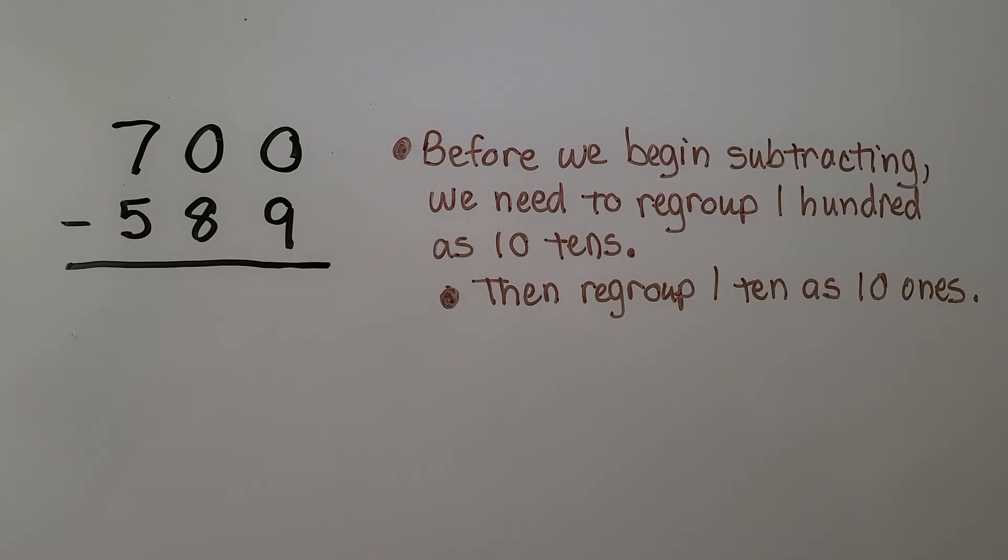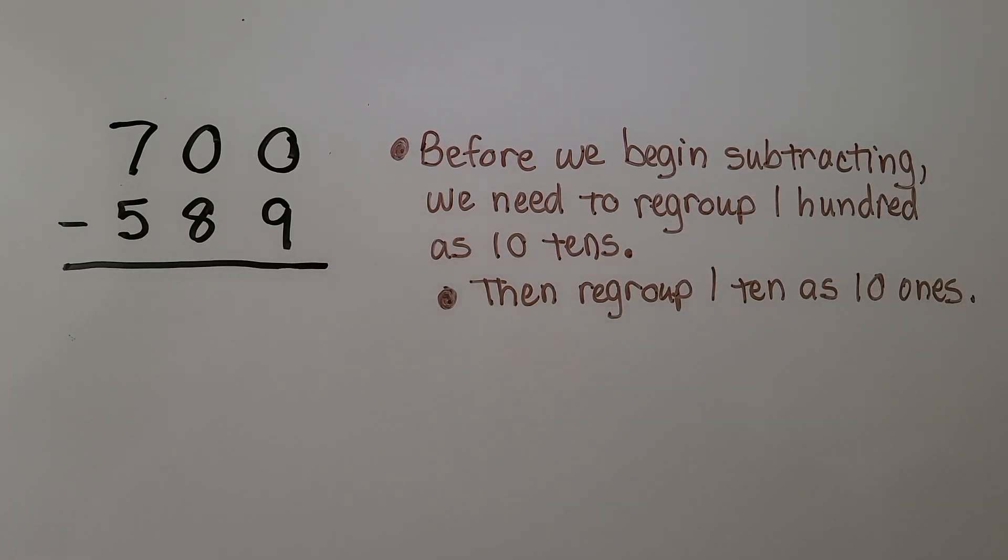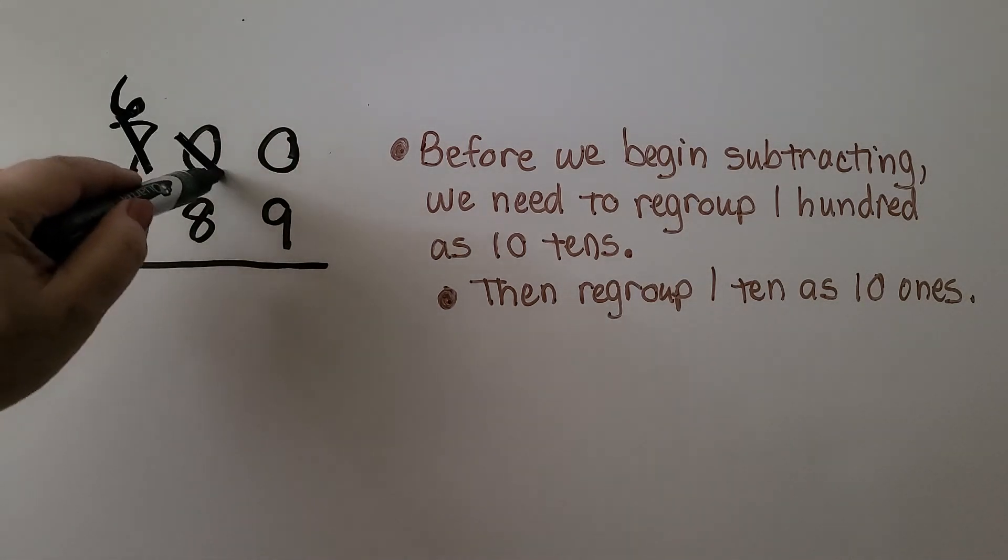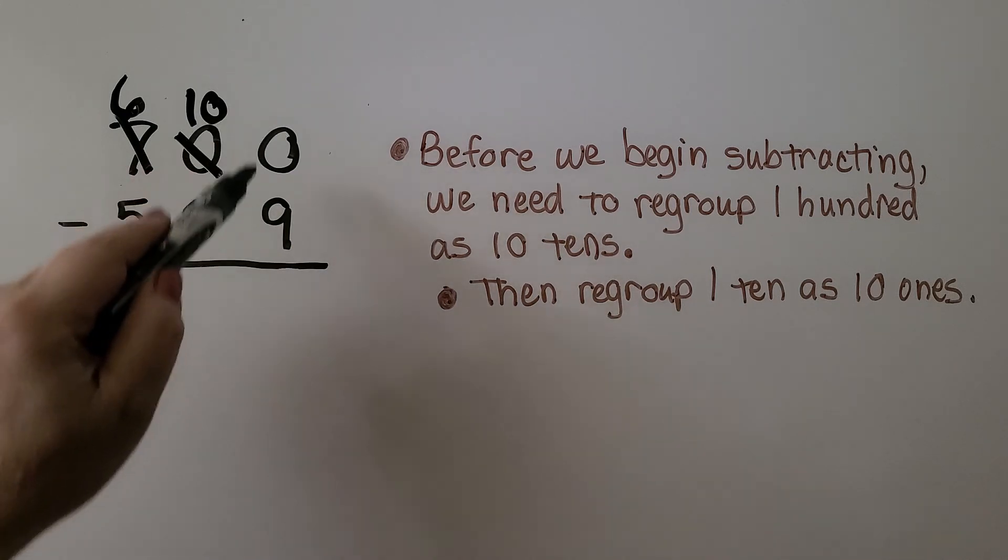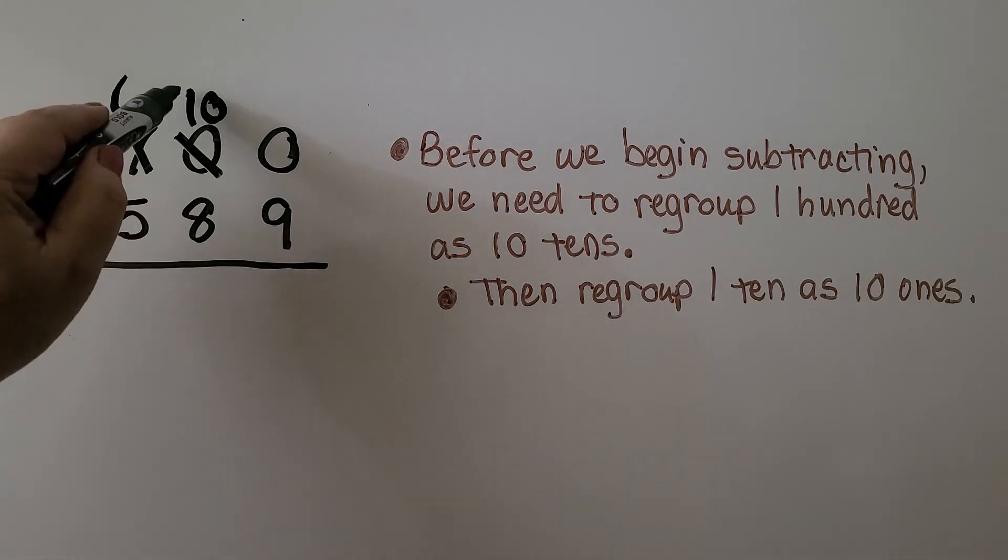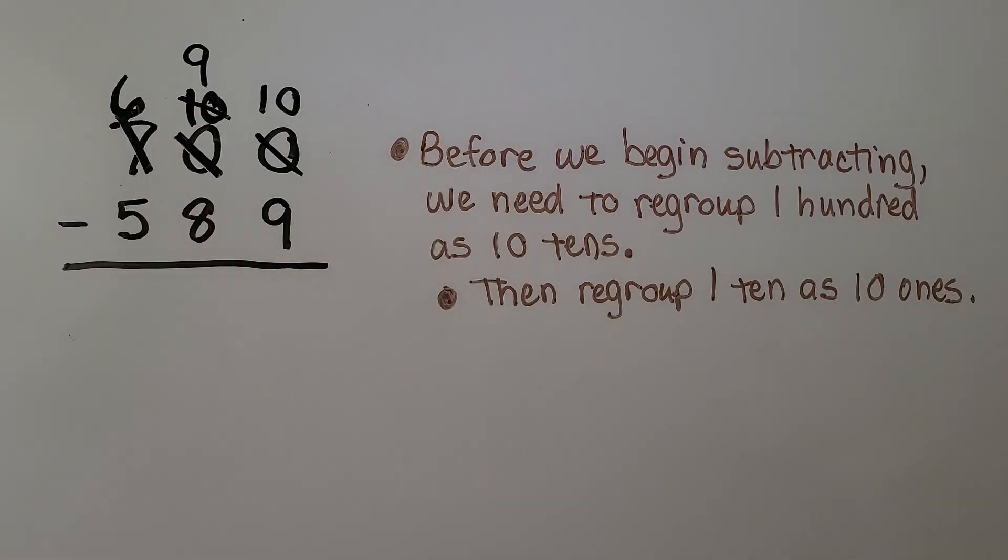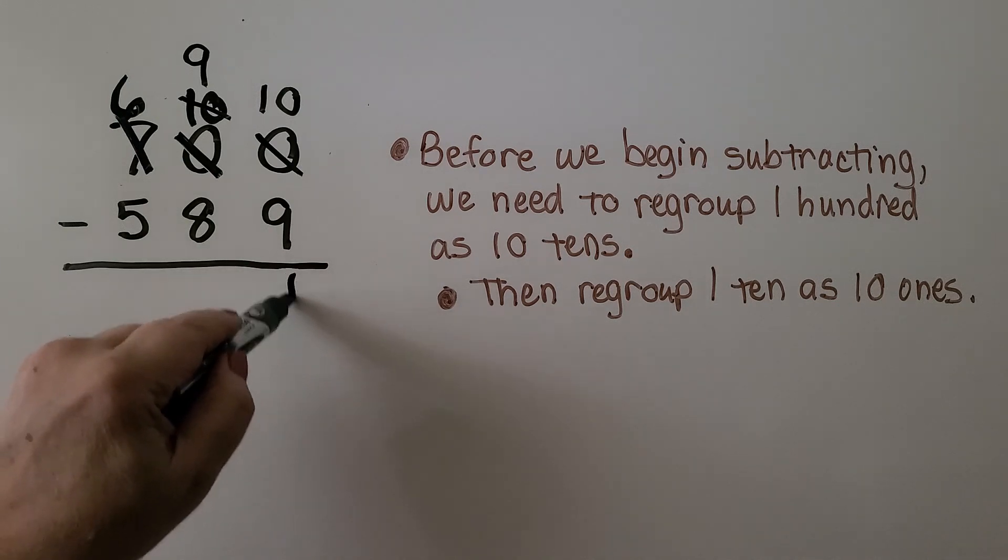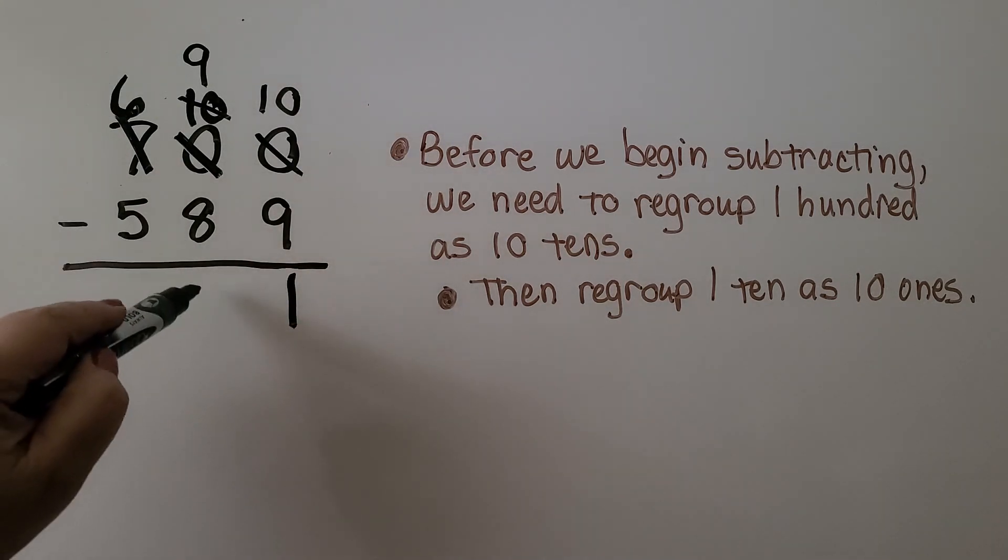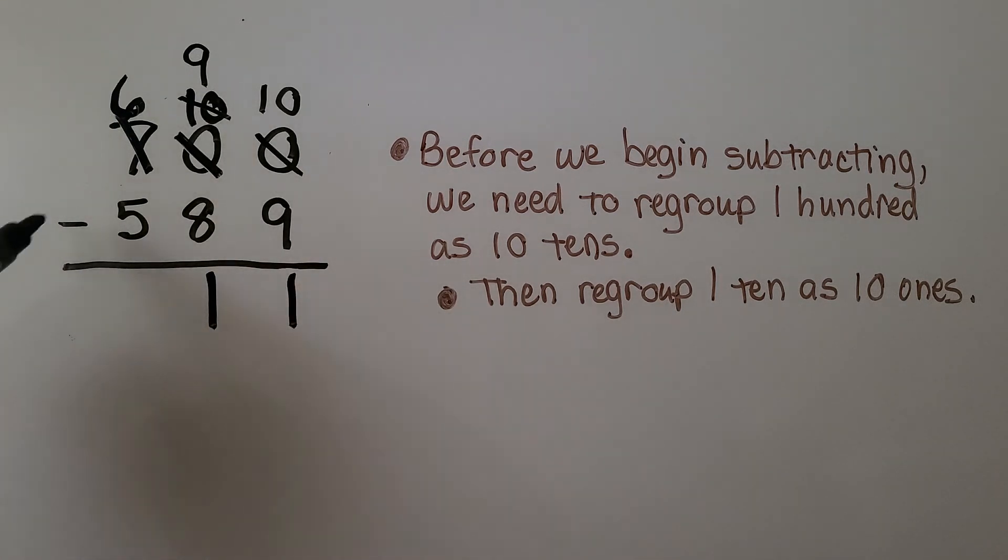Now our minuend has two zeros in the ones place and the tens place. We have seven hundred minus five hundred eighty-nine. Before we can even begin subtracting, we need to regroup one hundred as ten tens. Instead of seven hundreds, we now have six. Instead of zero tens, we have ten tens. Now we can do the zero minus nine by regrouping. This becomes nine tens and this becomes ten ones. Ten ones minus nine ones is one one. Nine tens minus eight tens is one ten. And six hundred minus five hundred is one hundred. Our difference is one hundred eleven.